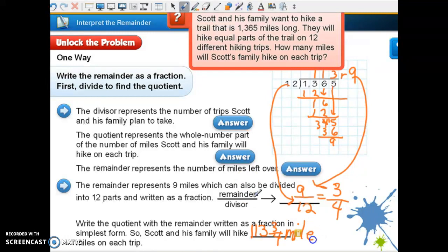So let's look at that simplest form. We can simplify 9 twelfths by dividing each of those by 3. And there are how many 3s in 9 and how many 3s in 12. Write the quotient with the remainder. So we're going to have 113 and three-fourths miles on each trip. So that is how you do it. The remainder over the divisor.